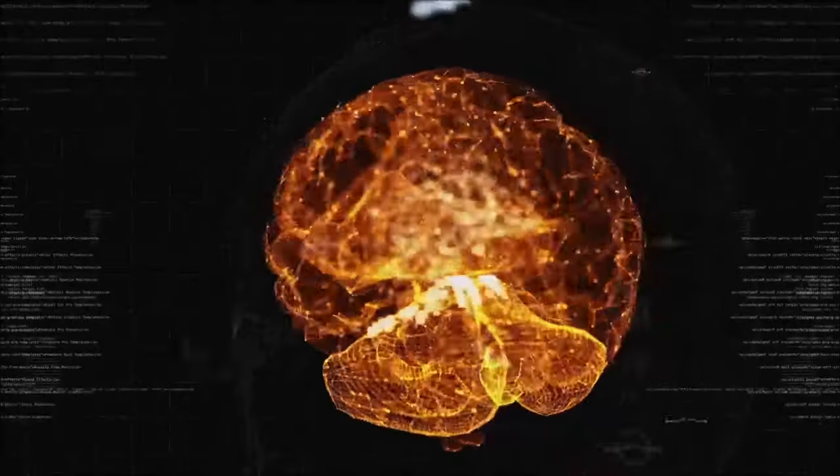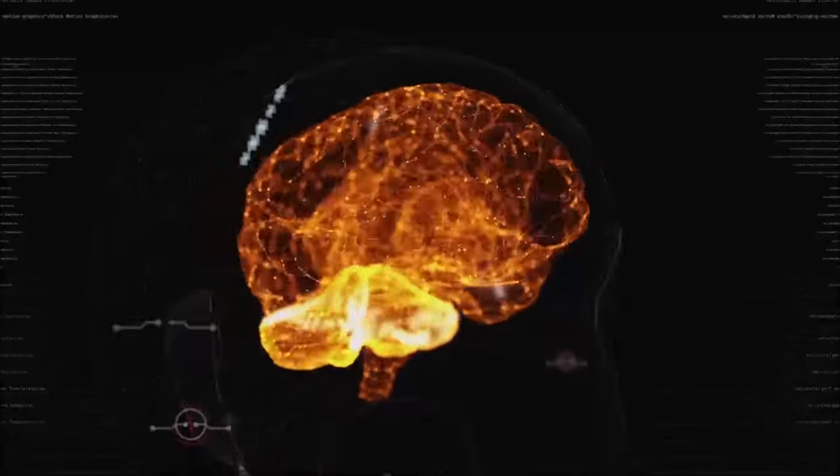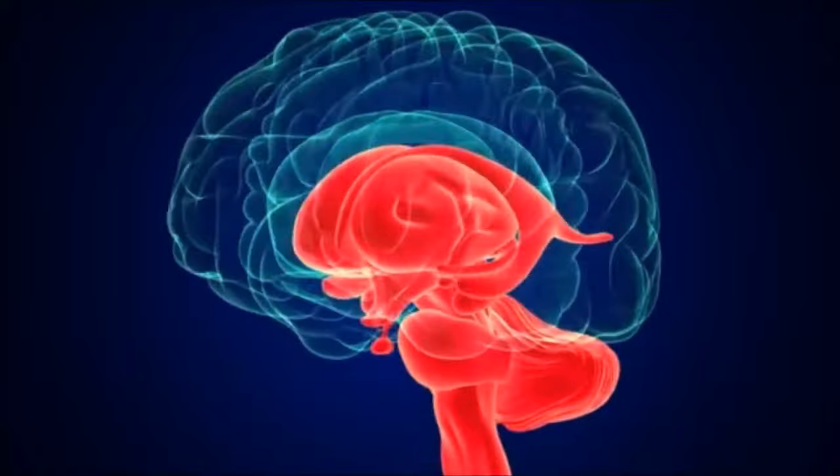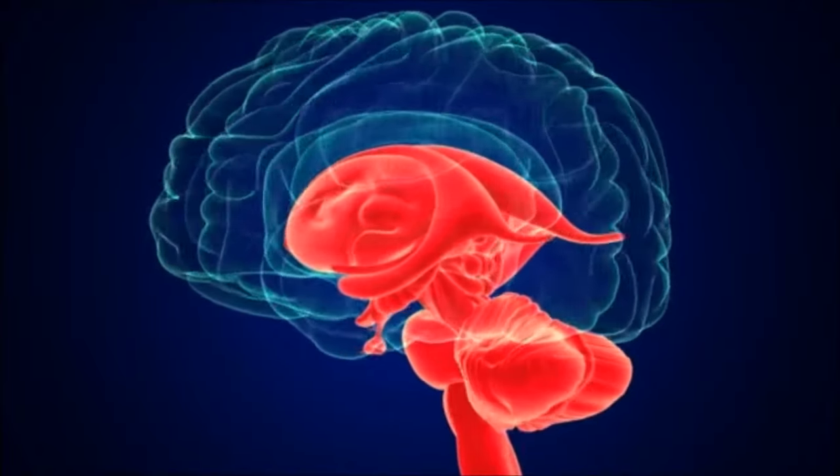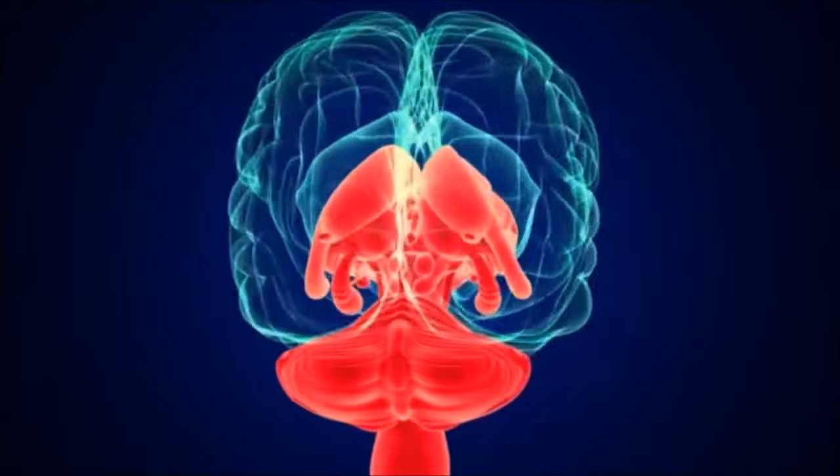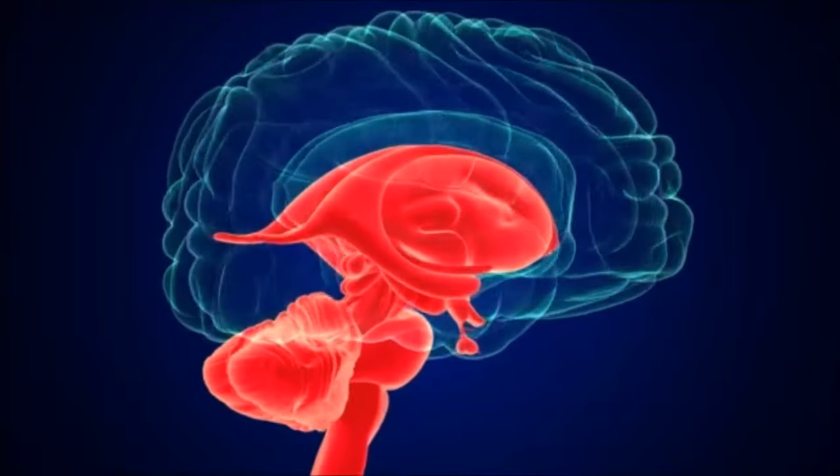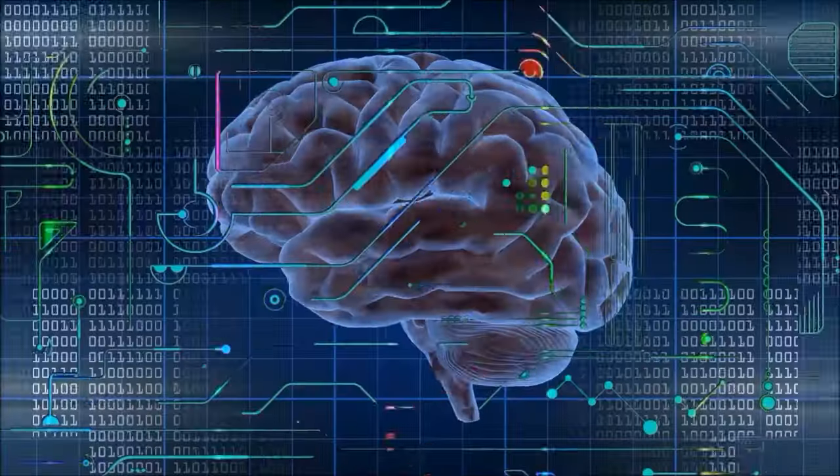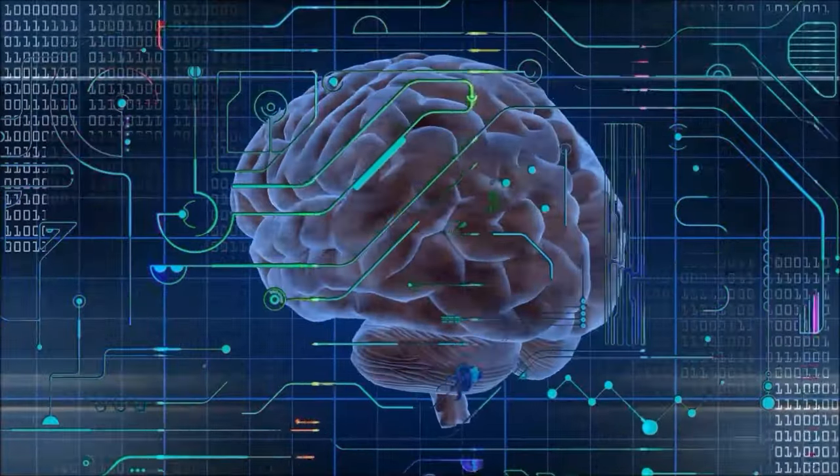The brain is the most complex and central organ of the human body. Anatomically, it consists of three main regions: the cerebellum, the brainstem, and the cerebral hemispheres. Each region undertakes unique tasks and controls different functions of the body.